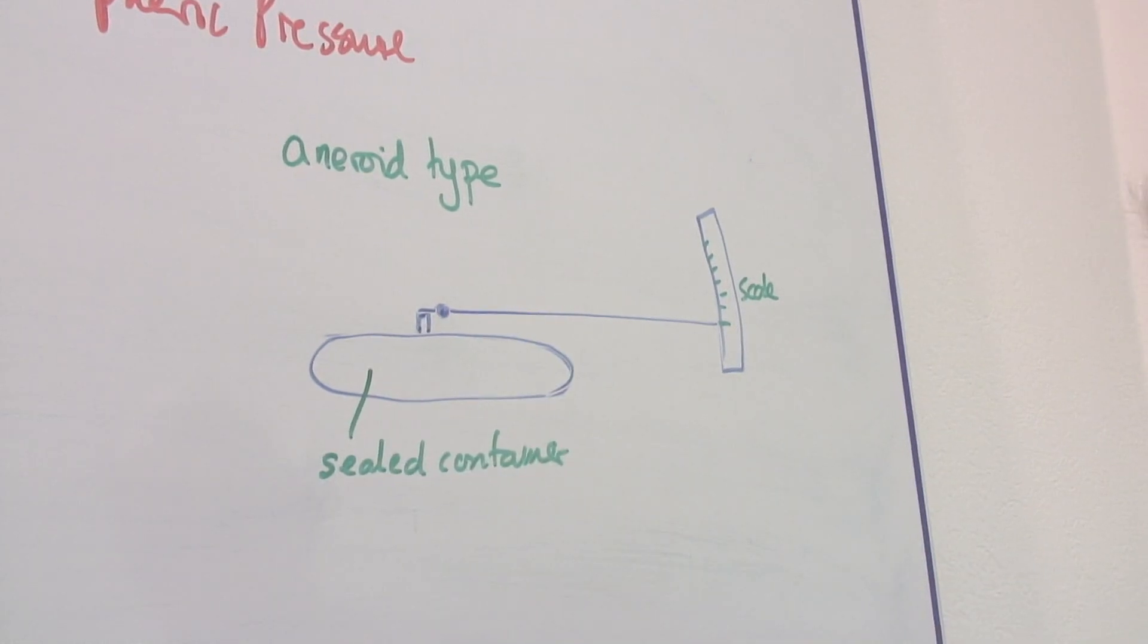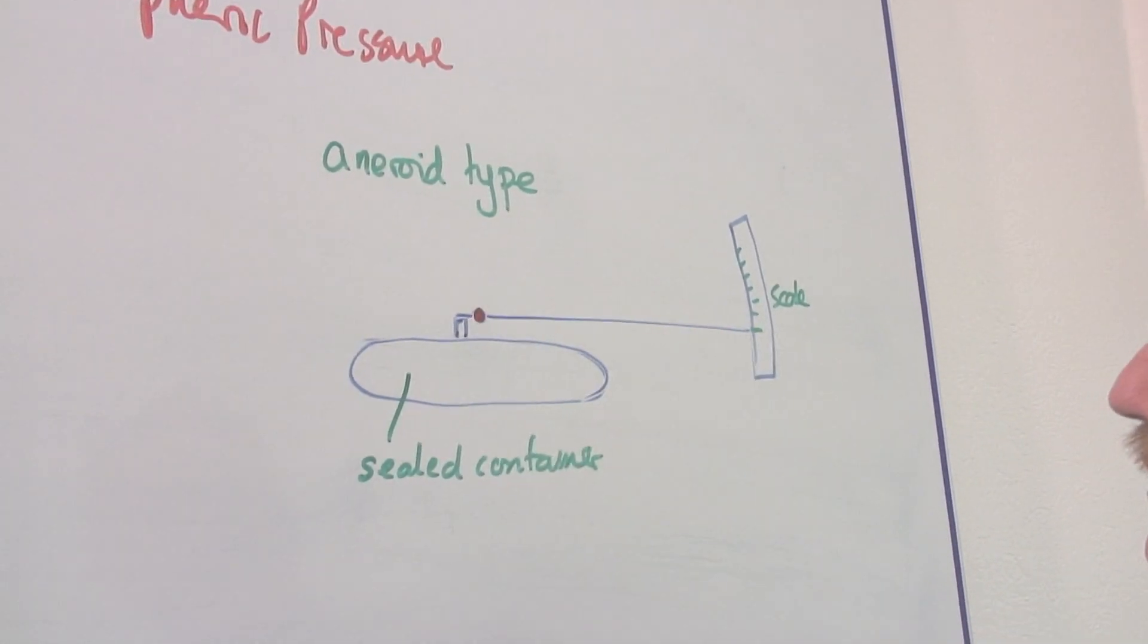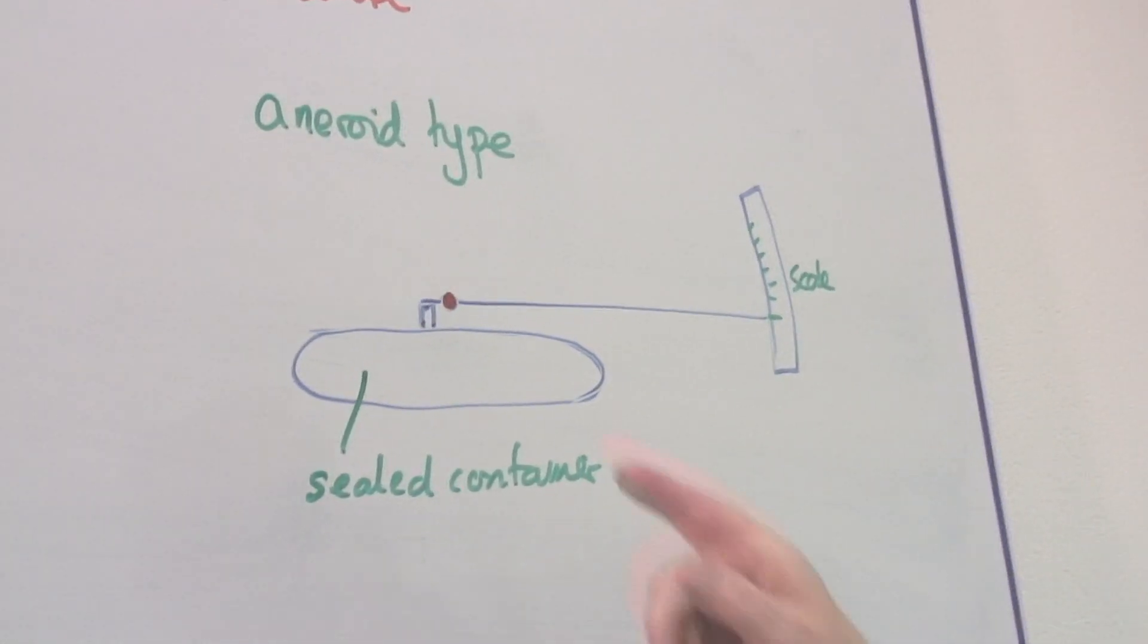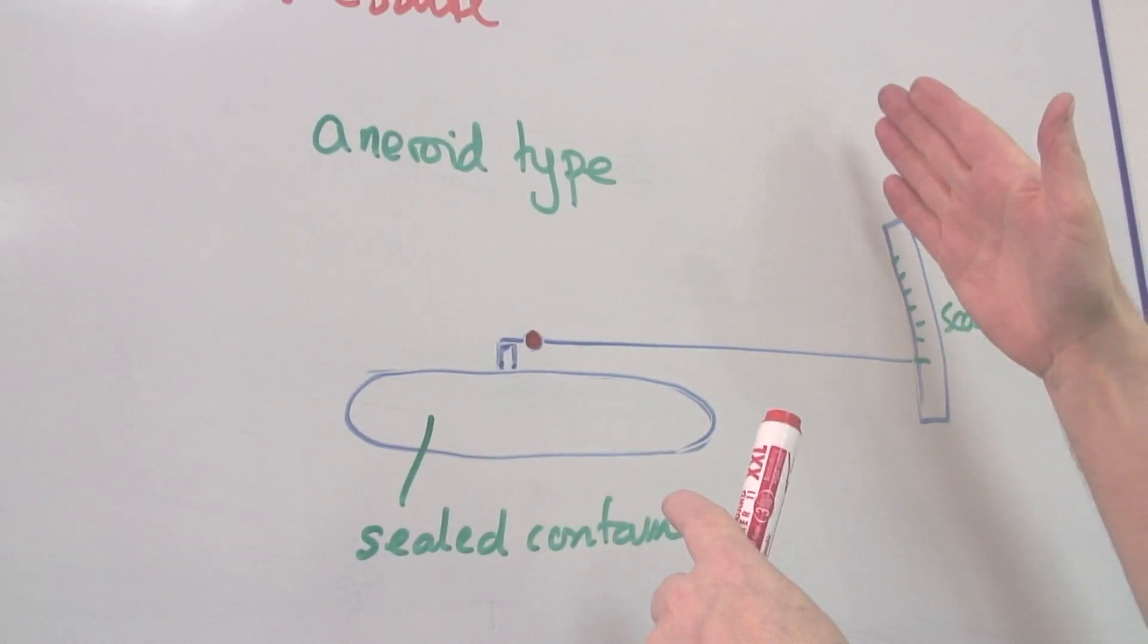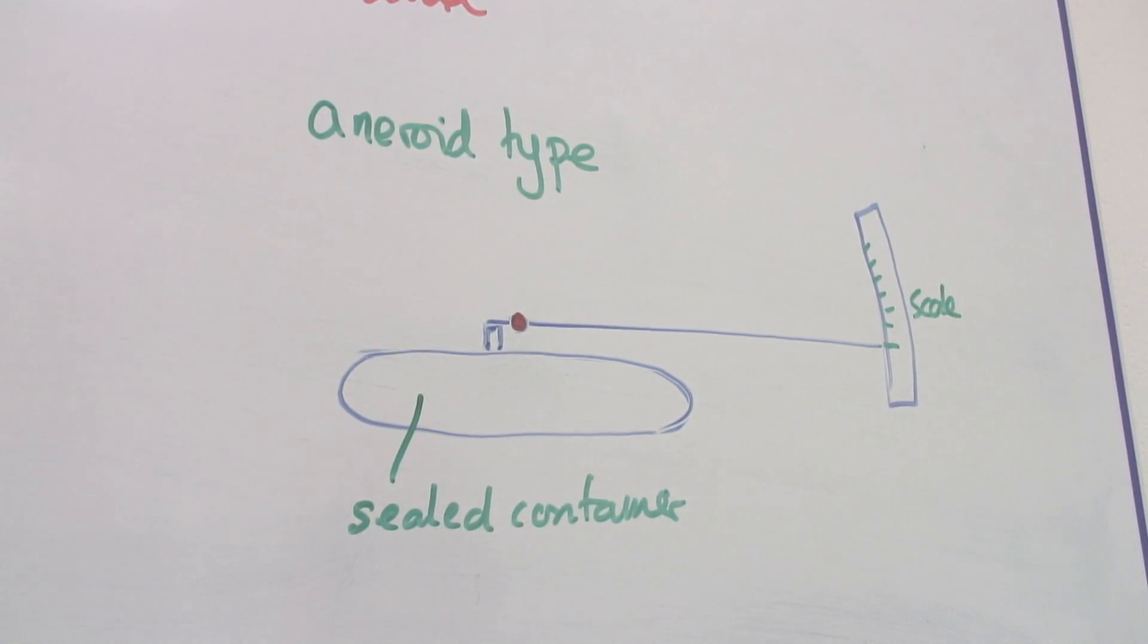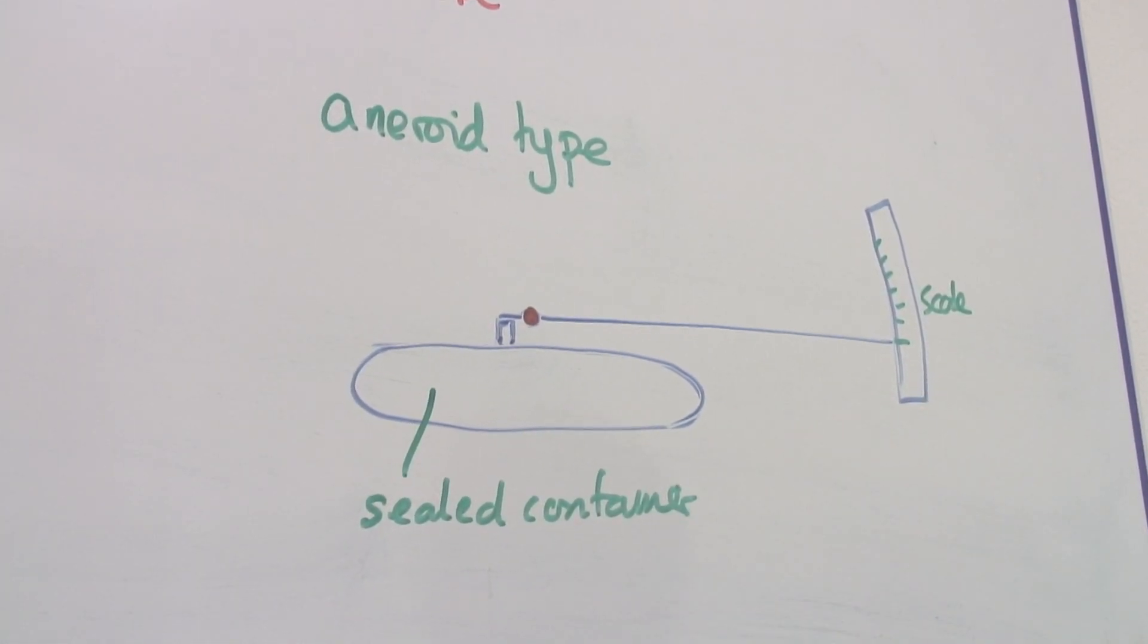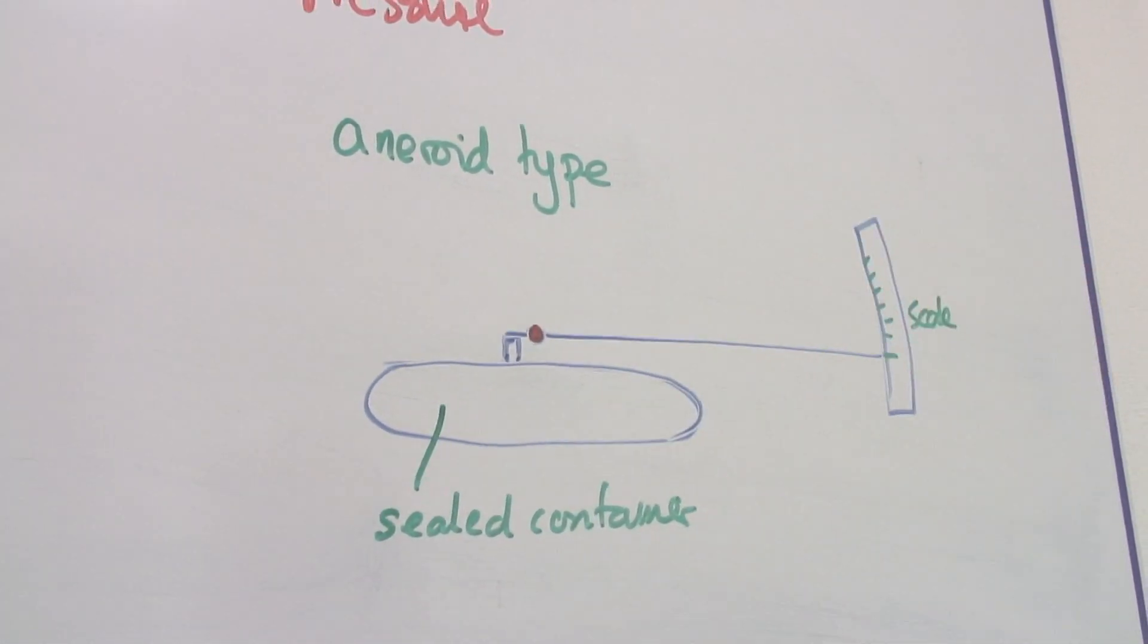If the pivot, this is a fixed pivot, if this fixed pivot is quite close to here, then you will get a big movement at this end for a small movement at this end. And this is a traditional type of aneroid barometer.